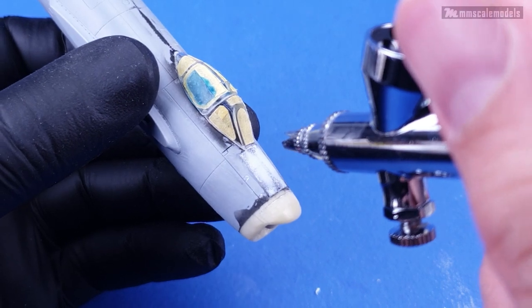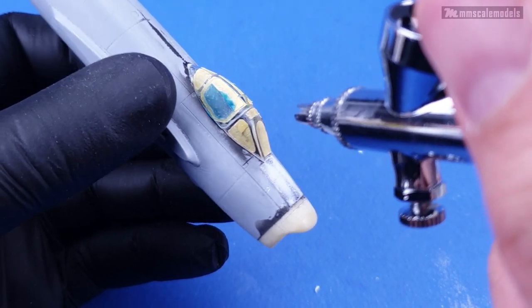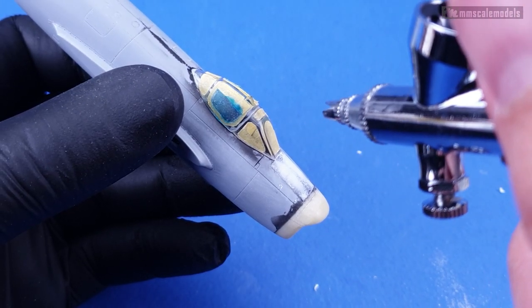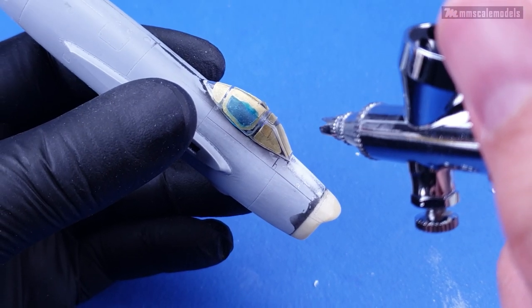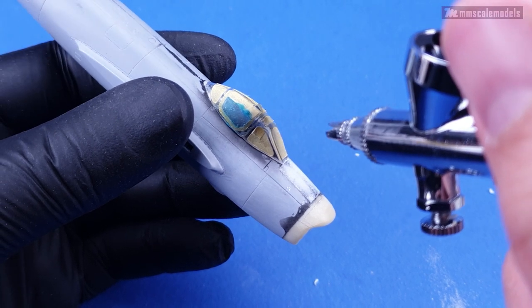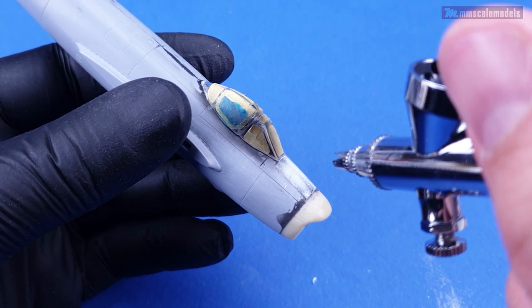Next up comes a guide coat in the form of flat black paint. This will also be the interior color of the canopy frames. So naturally it will cover the frames and all surfaces that need any kind of sanding.